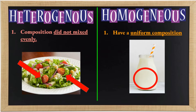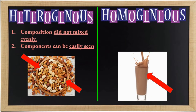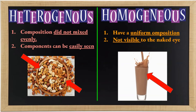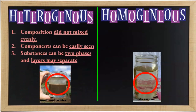For heterogeneous mixtures, the components can be easily seen — just like these mixed nuts, where you can still identify the cashew, the peanuts, or the almond. While for homogeneous mixtures, the components cannot be seen or are not visible to the naked eye — just like chocolate drink. The substances in heterogeneous mixtures can be in two phases, and layers may separate, just like mud and water, where you can see distinct layers forming.